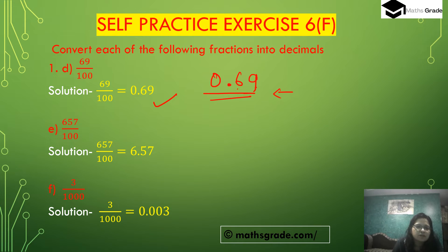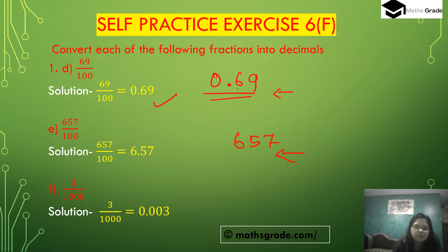Part e: 657 divided by 100. The denominator 100 has two zeros, so we place two digits after the decimal point. Counting two digits from the right of 657, we place the decimal point to get 6.57.